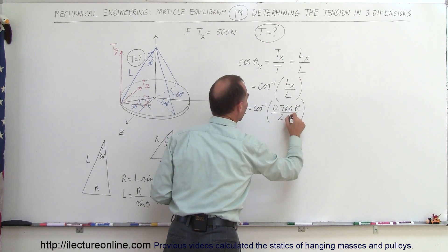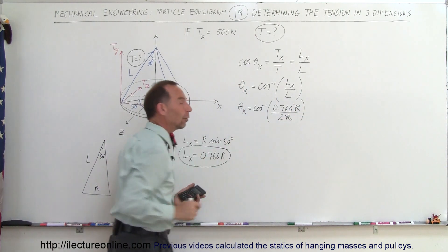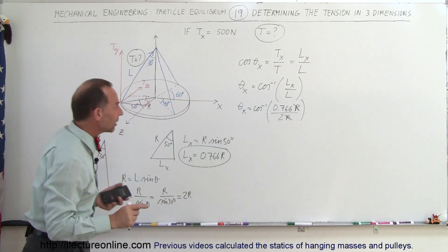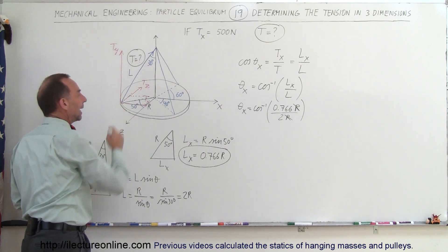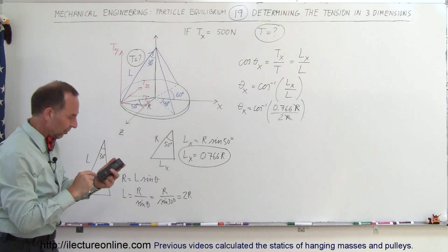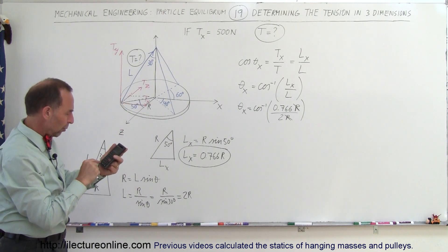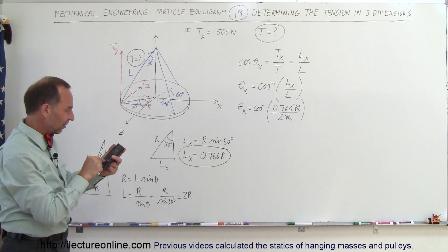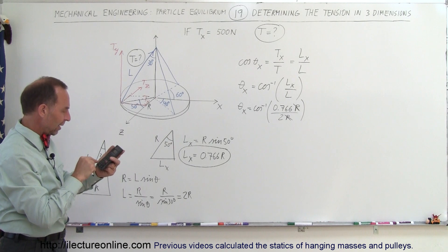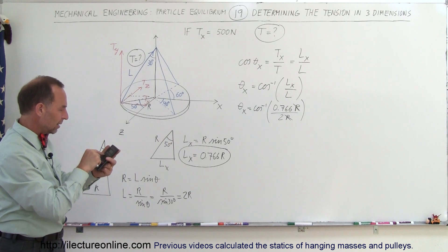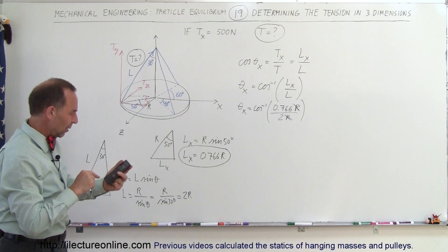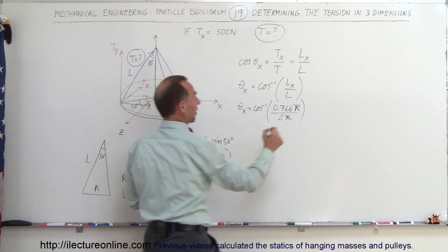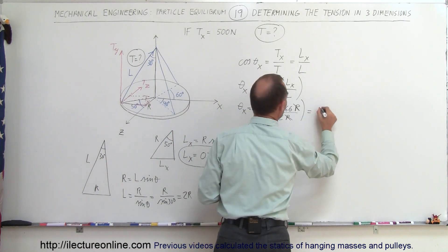Dividing by 2R, the R's cancel out, giving us 0.766 divided by 2. Taking the arccos of that gives the angle between the line and the x-axis: theta sub x equals 67.5 degrees.